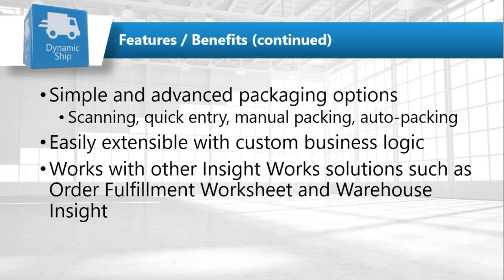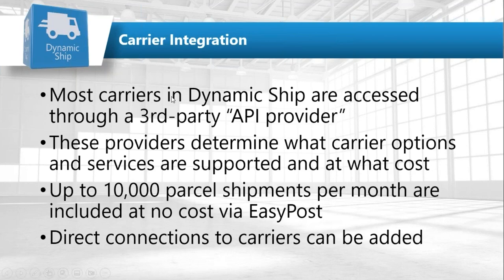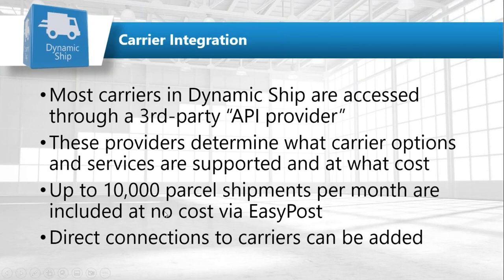On carrier integration — we support roughly 500 carriers, most accessed through what we call an API provider or freight integration provider. Those providers determine which carriers and services are supported. For LTL and FTL there may be an additional cost through those providers, but for parcel you can do 10,000 shipments a month with no extra cost beyond the Dynamic Ship subscription. Above that threshold, there's a small per-shipment charge. We also have some direct connections to carriers like FedEx, and if you have a custom carrier you want to use, you can plug those in as well.